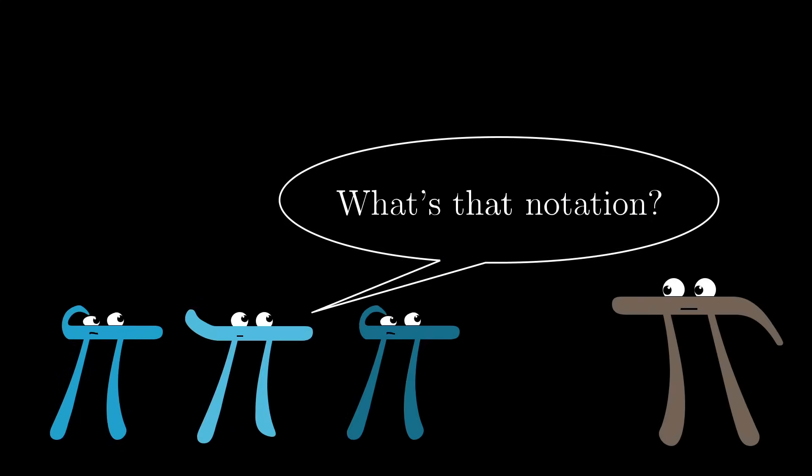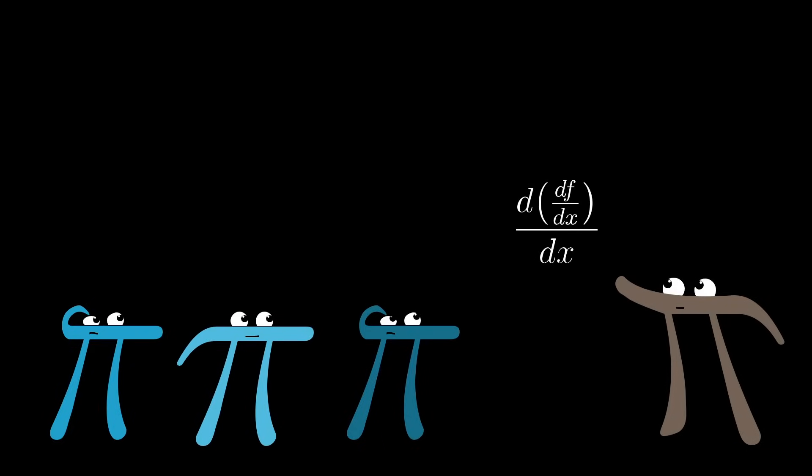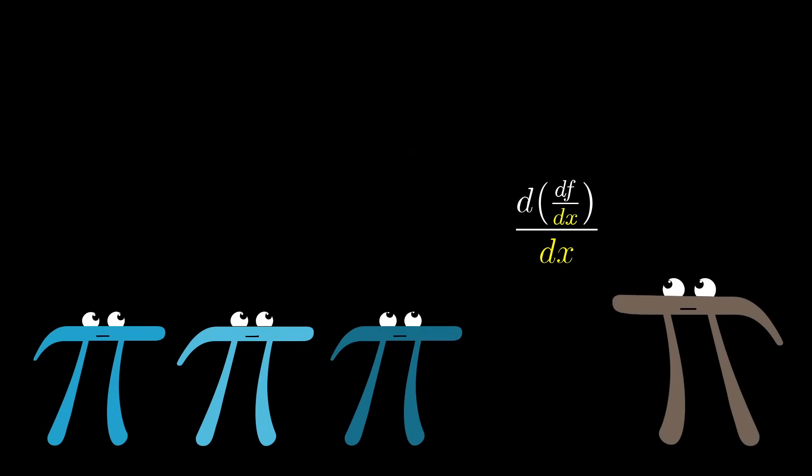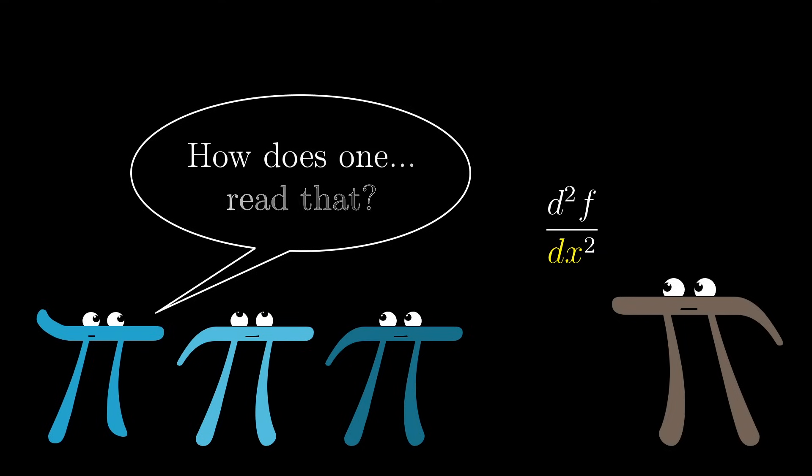As far as notation goes, you could try writing it like this, indicating some small change to the derivative function, divided by some small change to x, where, as always, the use of this letter d suggests that what you really want to consider is what this ratio approaches as dx, both dx's in this case, approach zero. That's pretty awkward and clunky, so the standard is to abbreviate this as d squared f divided by dx squared.